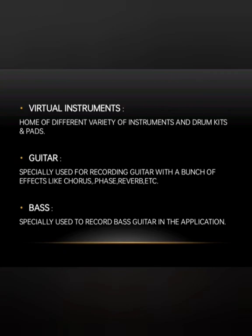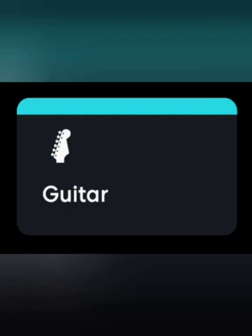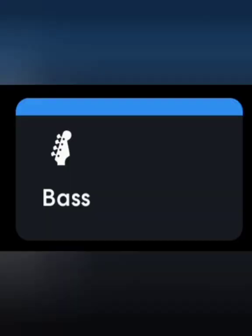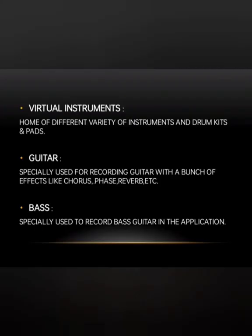Then you see the Guitar feature, which is for recording your own physical guitar. You can connect your guitar to your mobile phone and record it using this feature. The last feature is Bass, which lets you record bass guitars in the application. Now you know about all the features in the Track Type heading of the Create tab.